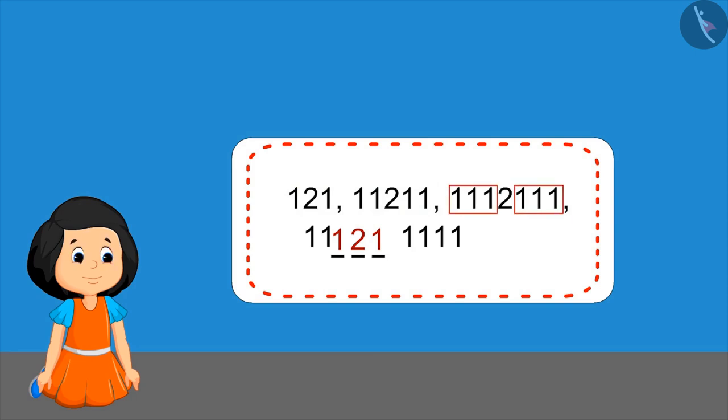Similarly, as we move forward, 1 will appear on both sides of the number for four times. Muni had made some mistake. Right answer is this.